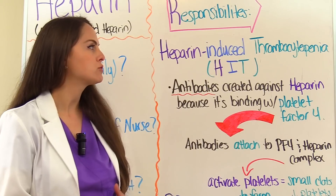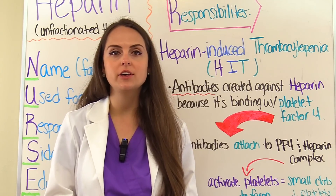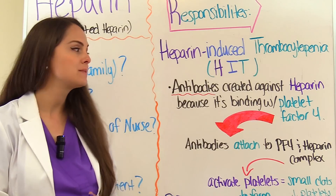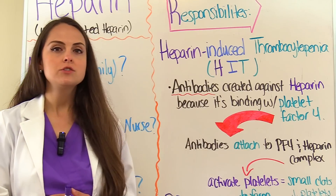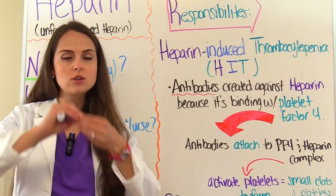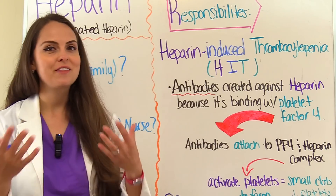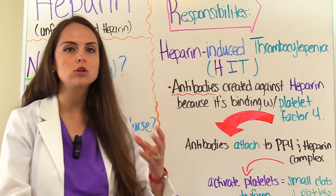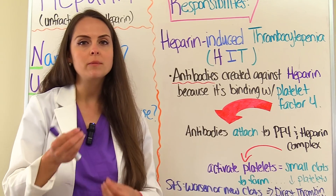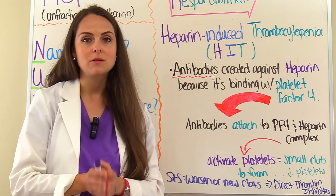Let's talk about heparin-induced thrombocytopenia (HIT) because it can happen to patients on heparin. Antibodies are created against heparin because it binds with platelet factor 4. When heparin and platelet factor 4 bind, these antibodies are created and attach to this complex. Once attached, they activate the platelets, which causes small clots to form and depletes the platelet count — hence thrombocytopenia. This is why we want to monitor the CBC platelets and watch for a drastic drop, which can indicate the patient is going into HIT.